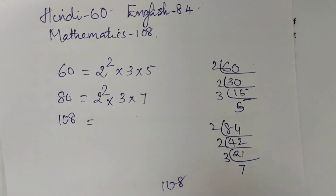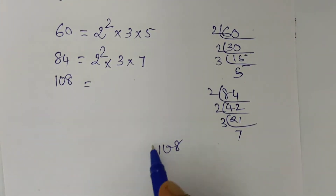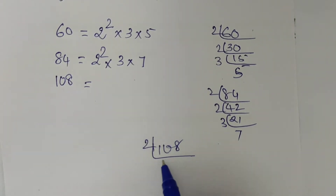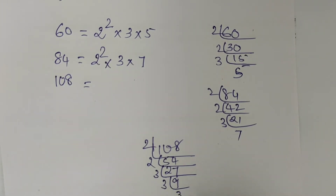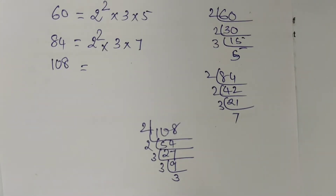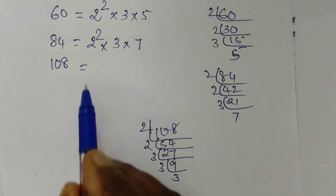We get 108: dividing by 2 gives 54, dividing by 2 gives 27, dividing by 3 gives 9, then 3 and 3. So 108 can be written as 2 squared into 3 cubed.